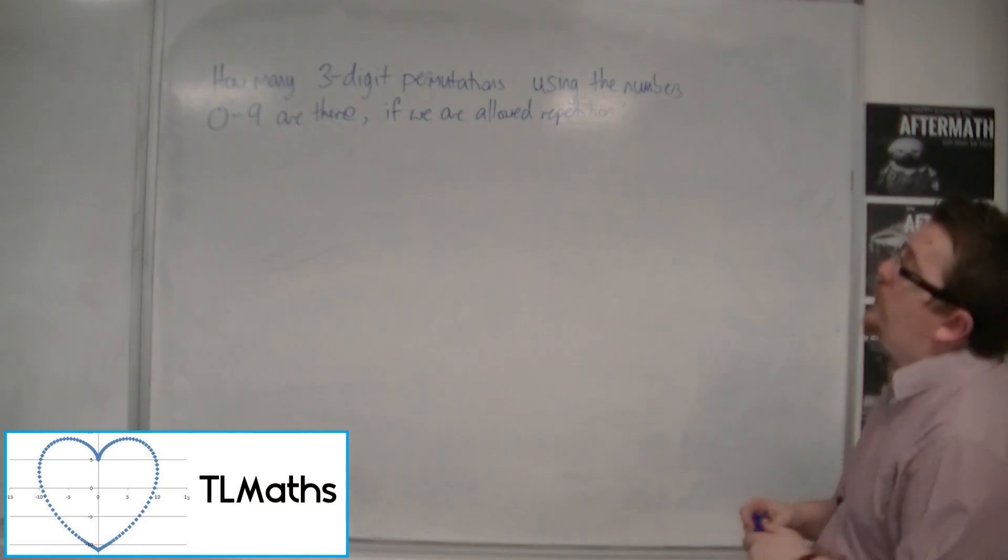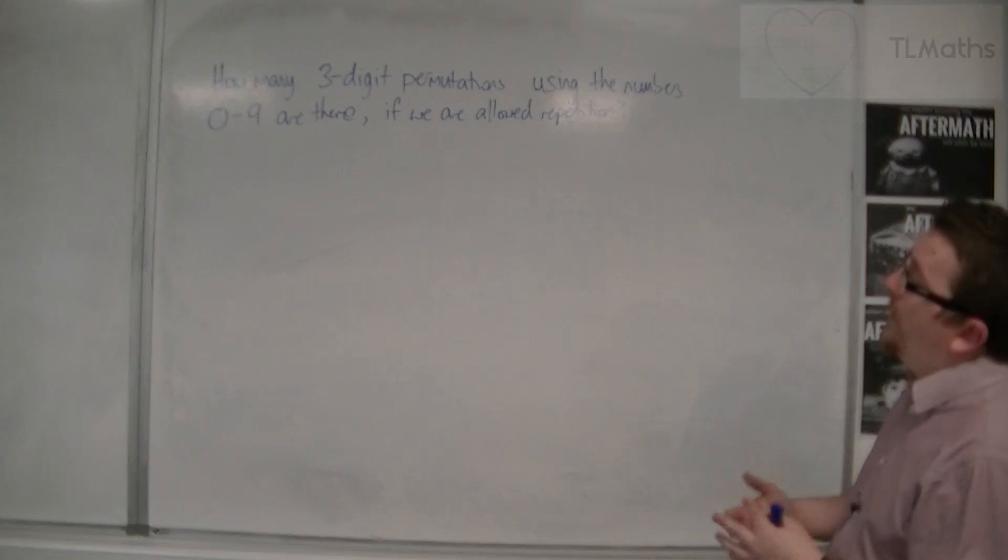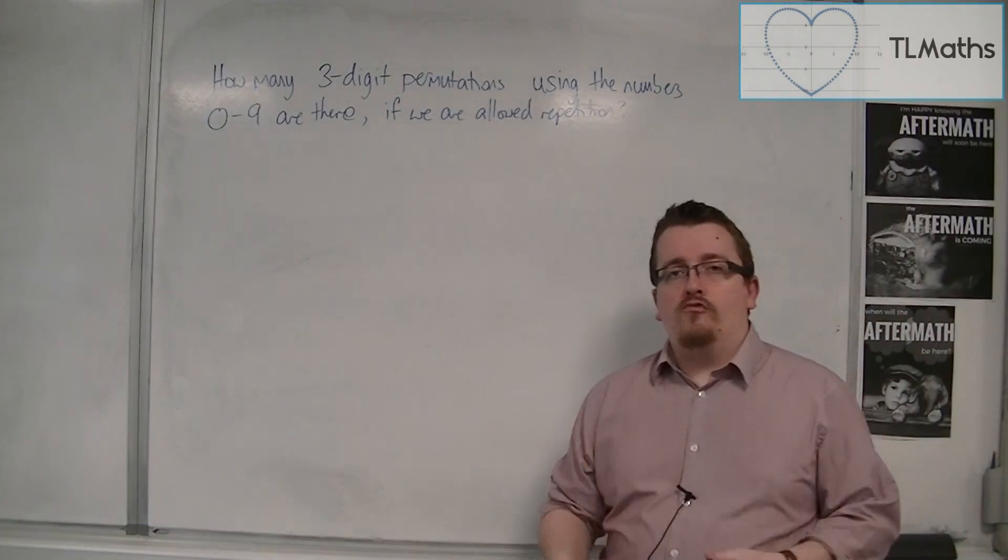Okay, so how many three-digit permutations using the numbers 0 to 9 are there, if we are allowed repetition?